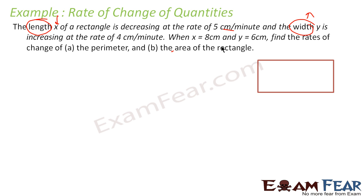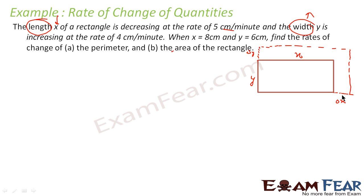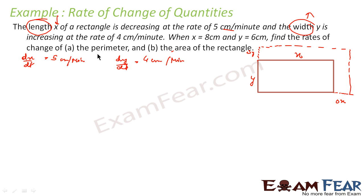The length is x and the width is y. Both are changing — x is decreasing and y is increasing. The new rectangle has dimensions x + Δx and y + Δy. We are told dx/dt = -5 cm/min (decreasing) and dy/dt = +4 cm/min. We need to find the rate of change of perimeter and rate of change of area.